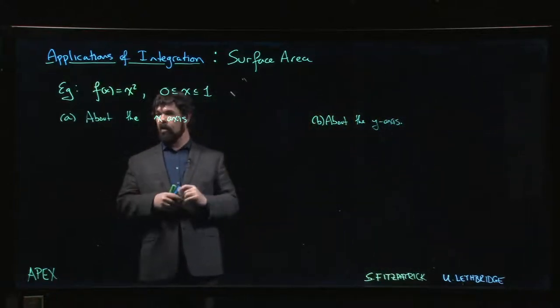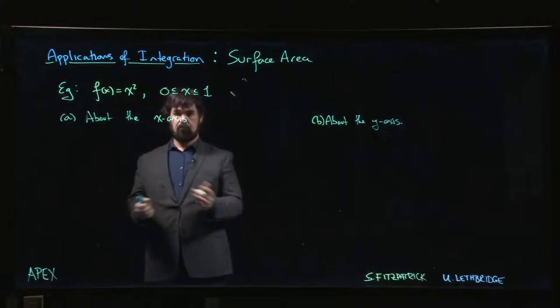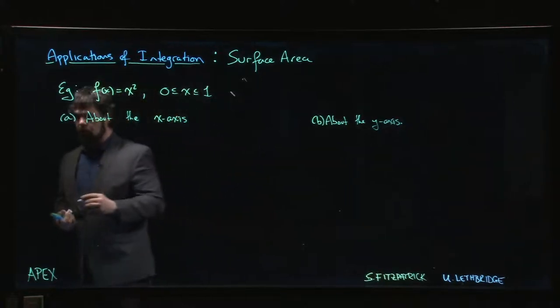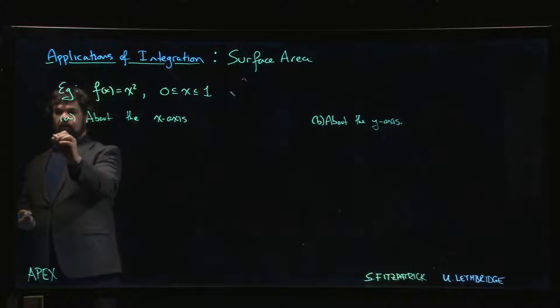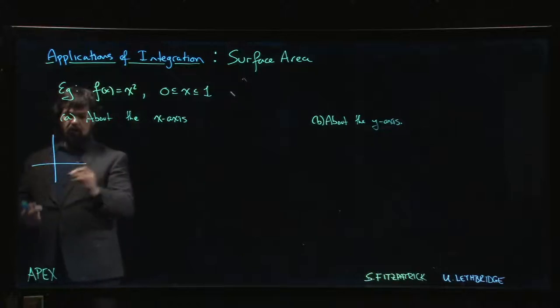For our next example we're looking at a fairly simple curve, a parabola, and we want to look at what happens when you revolve about the x-axis and then about the y-axis.